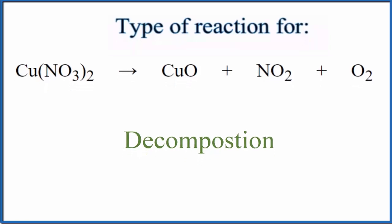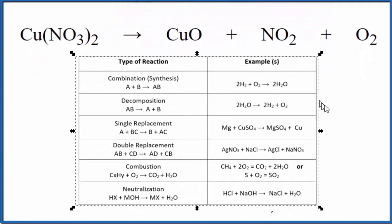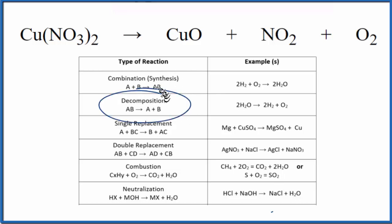If we look at a table of common chemical reactions here, we can see decomposition right here. And it follows this general format, AB breaks apart into A plus B.